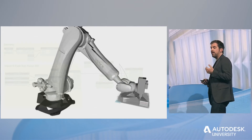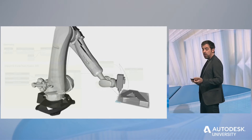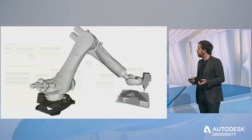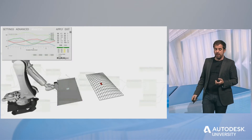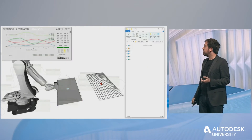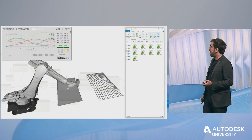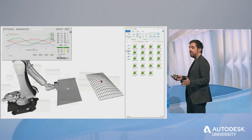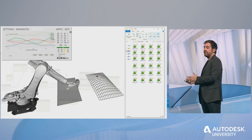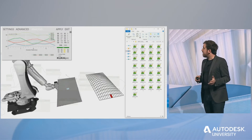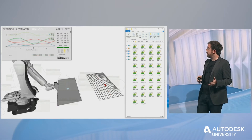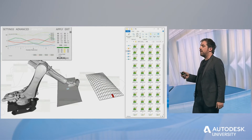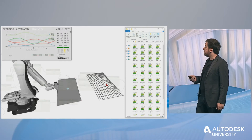But the interesting thing is when we actually link the data — the simulation of the robot — with flexible data. For example, we have a free-form surface consisting of several elements that all look somehow the same but each element is actually different. We can automatically extract these elements and also automatically generate the data for the robot to fabricate each piece.